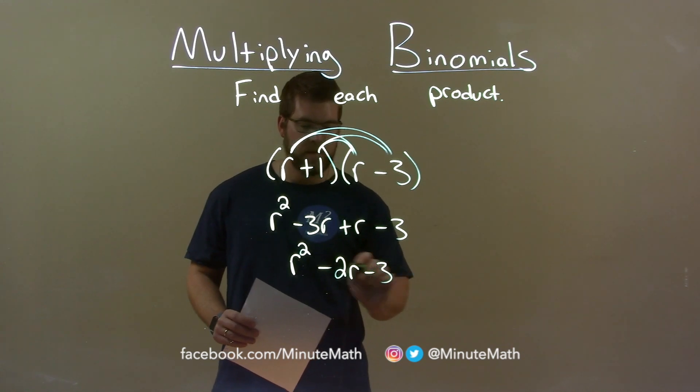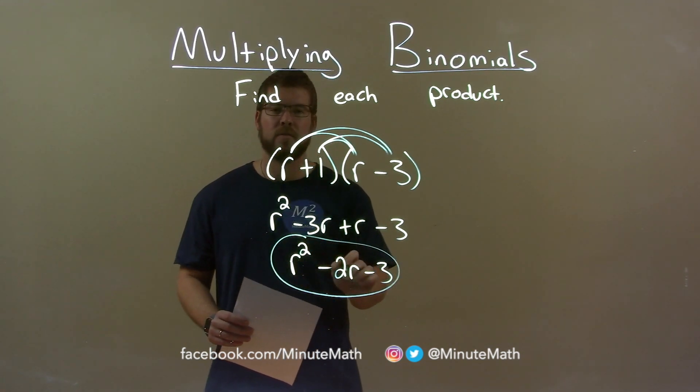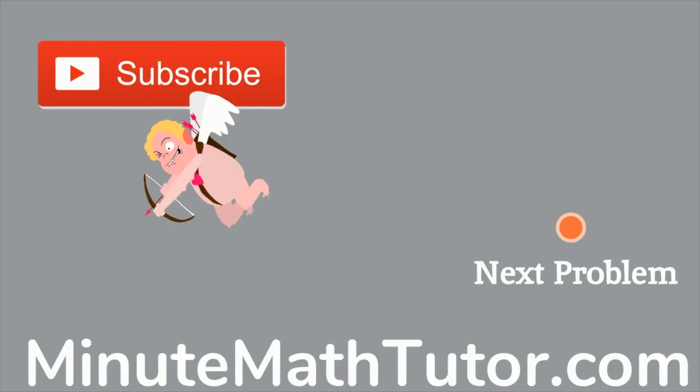Bring down the minus 3, and our final answer is r squared minus 2r minus 3.